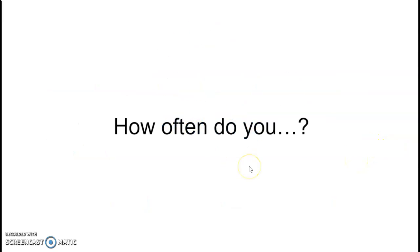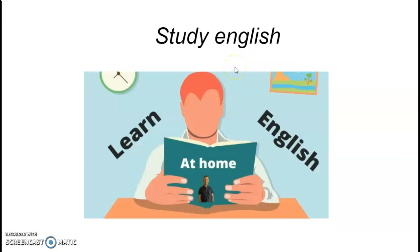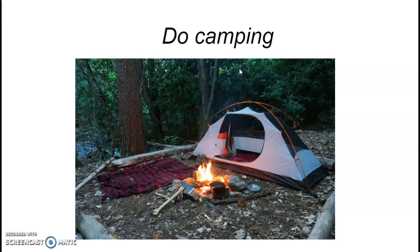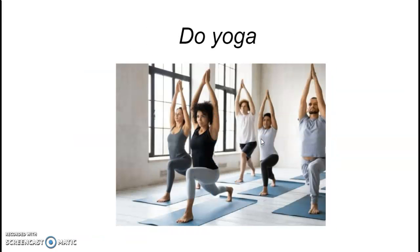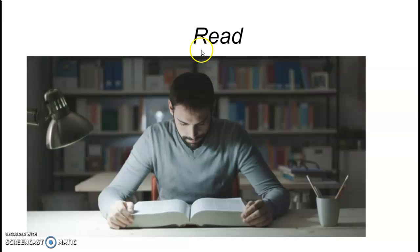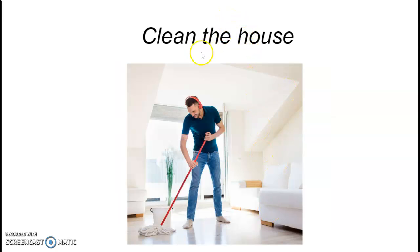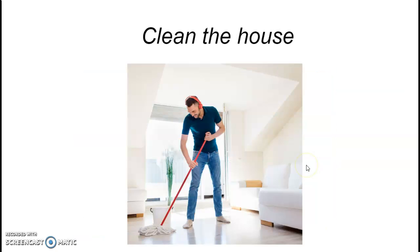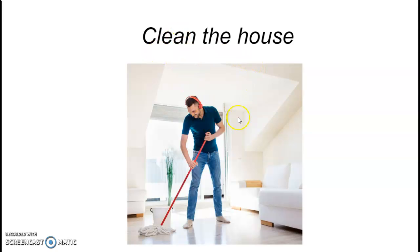Now we have an activity. First, you're going to answer how often you do each of these: read, do yoga, clean the house, study English, go to the supermarket, party, cook, and do camping. Then you'll practice again with past questions — 'How often did you read in Venezuela? How often did you do yoga in Venezuela?' etc. And finally, third person: 'How often does your sister read? How often does your sister do yoga?' and so on.